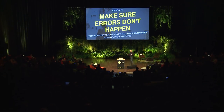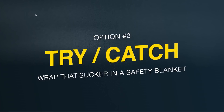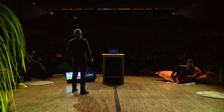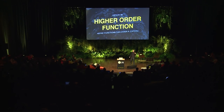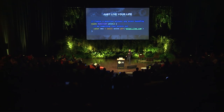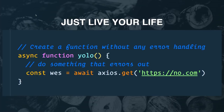Error handling can start to ugly things up. There are a few options. The first is to use a try/catch: wrap everything in a try/catch, write all your code inside the try, and if anything happens you catch the error and deal with it. The second option is a higher-order function, which is cool because you can chain a dot-catch on async functions — though it's a little more complicated.